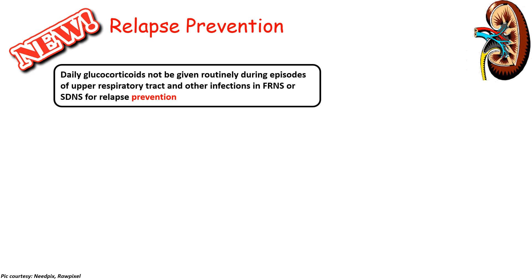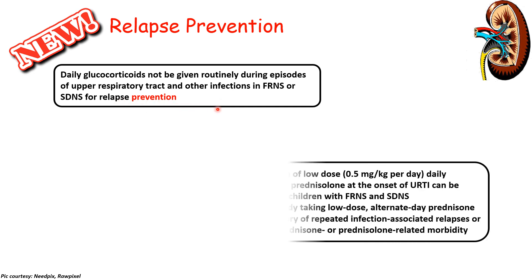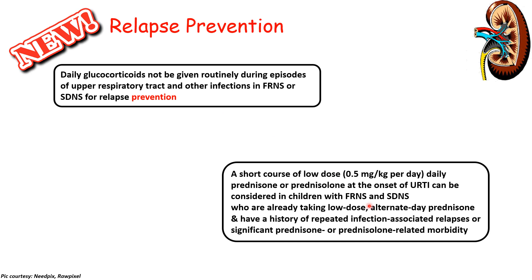For relapse prevention, daily steroids need not be given routinely during episodes of URTI in FRNS or SDNS patients who are in the inter-treatment period (i.e., in remission). However, if a child with FRNS or SDNS is already taking low-dose alternate-day steroids, a low-dose daily steroid therapy of 0.5 mg/kg/day should be given at the onset of URTI or infection.